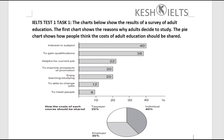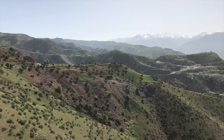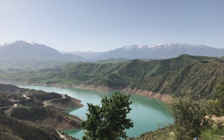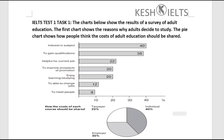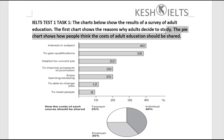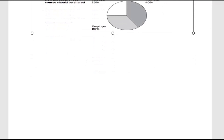Hello, today I would like to show you how to write Task 1 for a double chart. This is Test 1 Task 1 and the chart below shows the results of a survey of adult education. The first chart represents why adults decide to study, and the pie chart shows how people think the cost of adult education should be shared. I'm going to write an introduction, then an overall, then two body paragraphs for each chart.